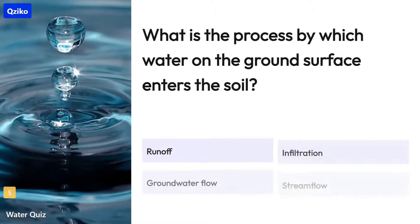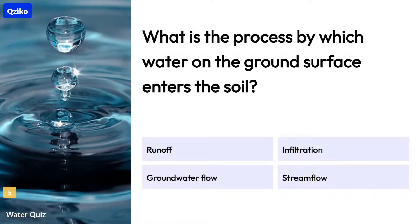Quiz number 5. What is the process by which water on the ground surface enters the soil? The right answer is infiltration.